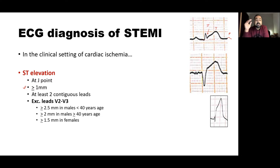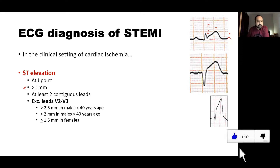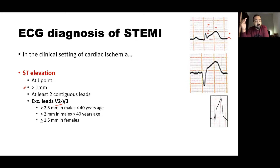These ST elevations should be seen in at least two contiguous leads. If you find ST elevation at the J point in two contiguous leads of at least 1 mm in a clinical setting of cardiac ischemia, think about STEMI. However, this 1 mm criterion does not apply in leads V2 and V3, where some ST elevation is normal. A higher threshold is required: at least 2.5 mm in males of certain age or more than 1.5 mm in females for STEMI diagnosis.